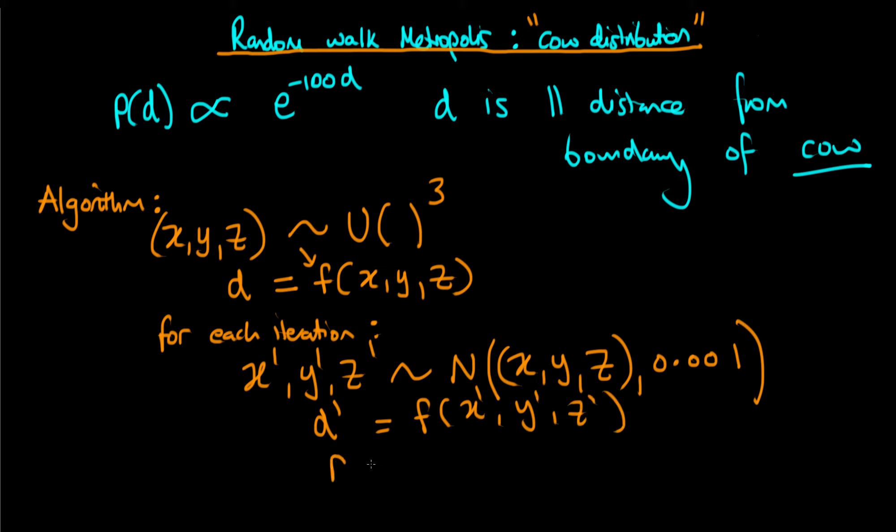Then what we do is calculate a ratio R, which is a ratio of the proposed unnormalized density. So e^(-100D') over e^(-100D).